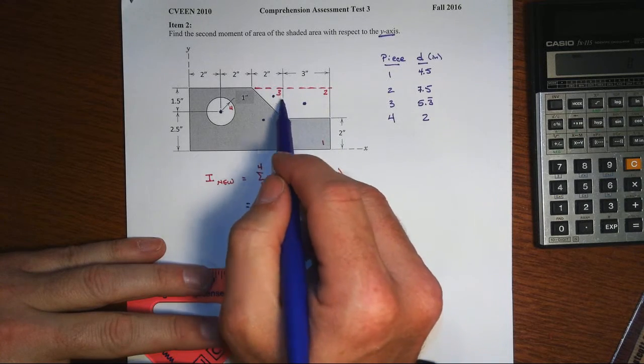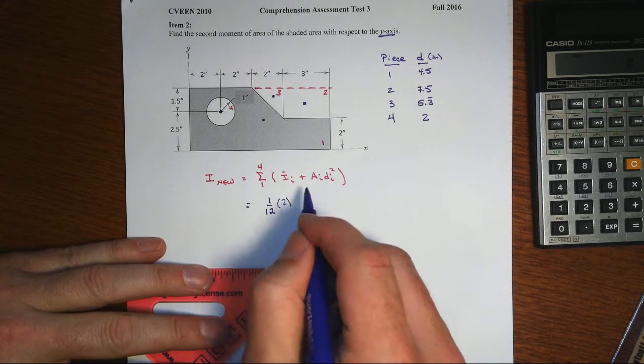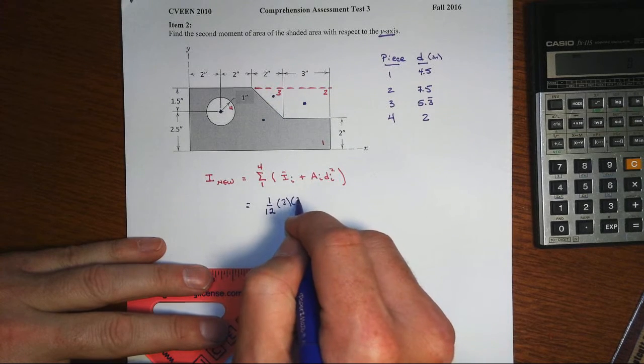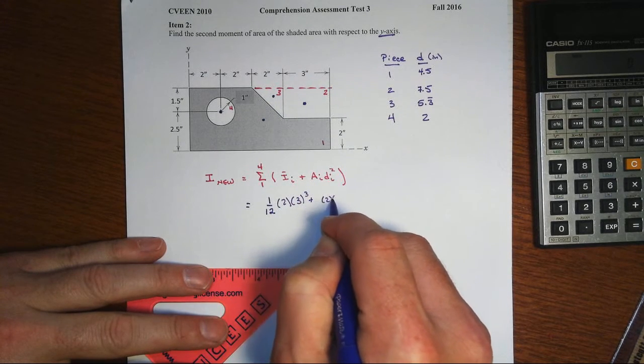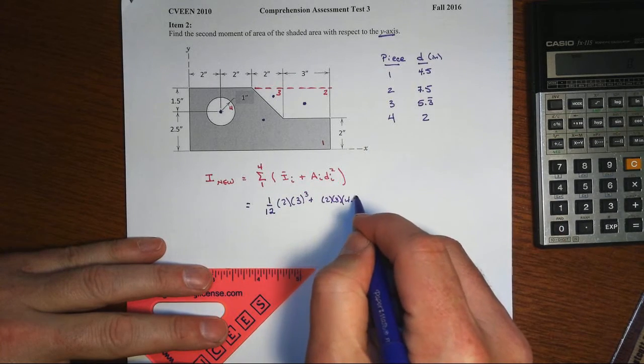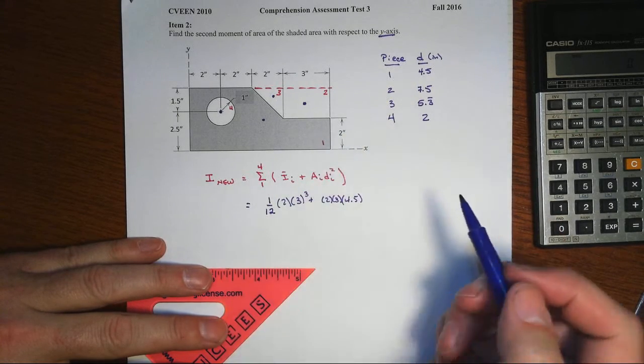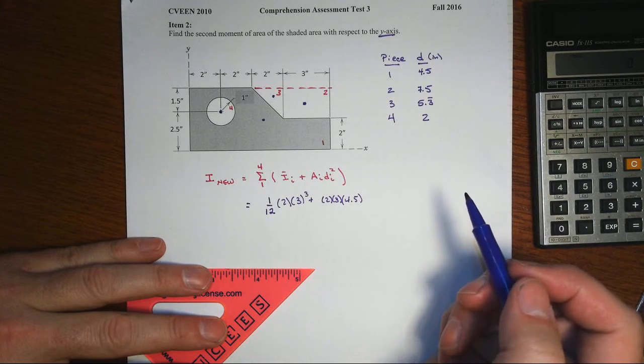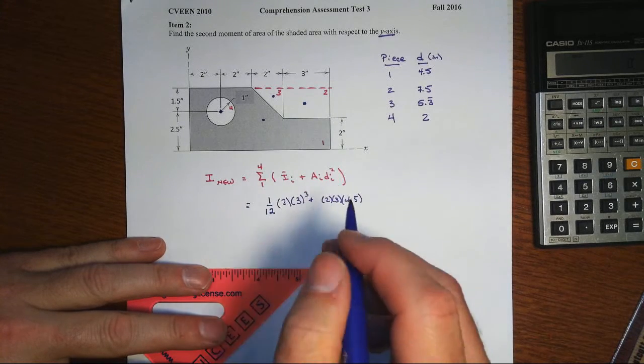The height is 3 cubed, plus the area 2 times 3, times the distance that we're moving it, 4.5. Sorry, I'm doing the wrong one. That would have been the item number 2.